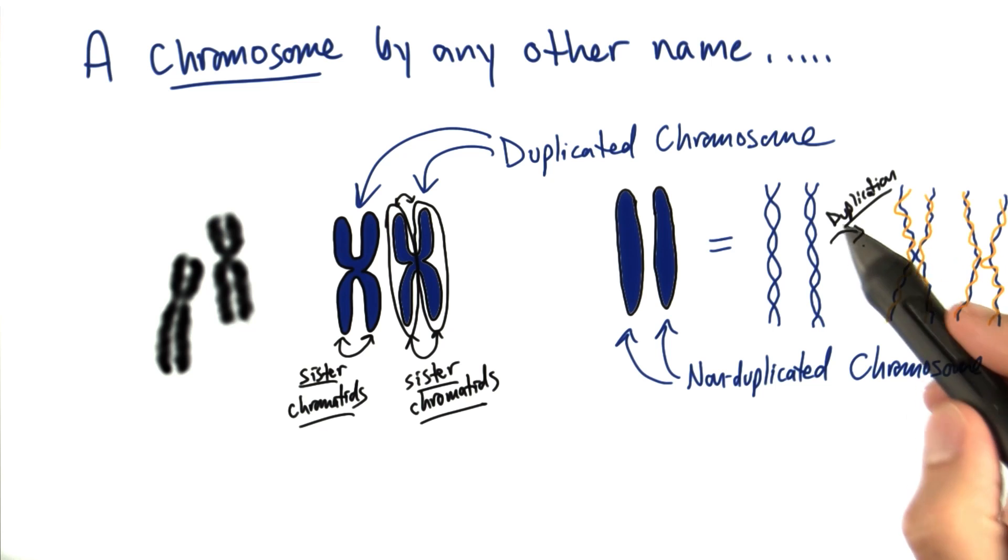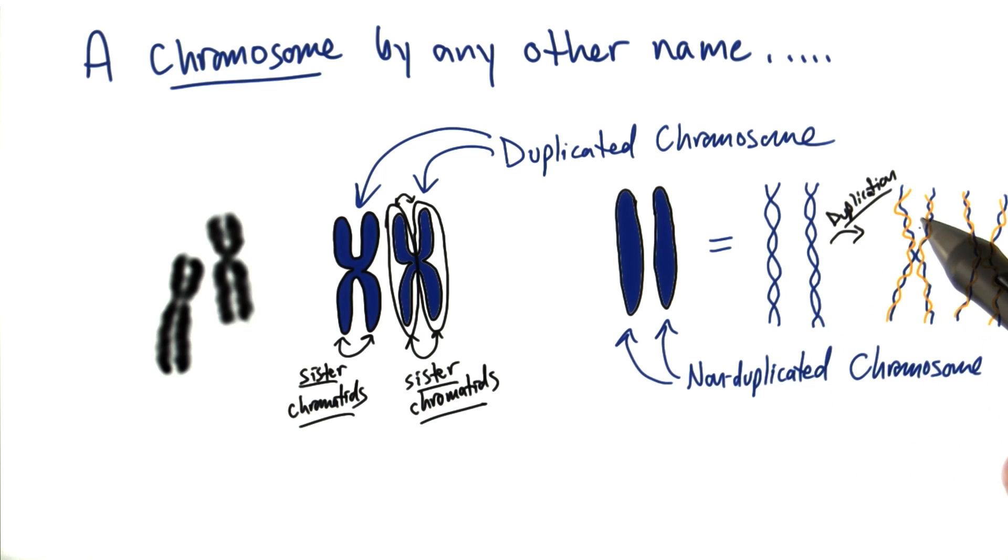But after duplication, the double-stranded DNA is now copied and now there are two copies, two double-stranded molecules of DNA. And they're joined together in the middle here. And this is what makes them look like these big X's over here.